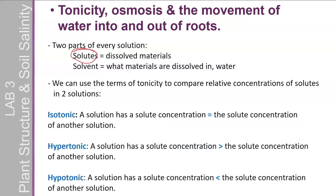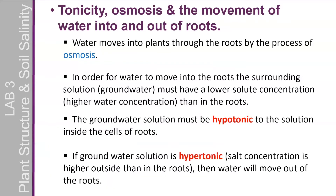We can actually calculate this using something called water potential, which is not included in this lab, but if you get into botany later you may end up seeing that. Water moves into plants through the roots by the process of osmosis. In order for water to move into the roots and surrounding tissue, you've got to have a lower solute concentration on the outside — which means you need a hypotonic solution. If it is hypertonic, water is going to go the wrong direction and dry your plant out.